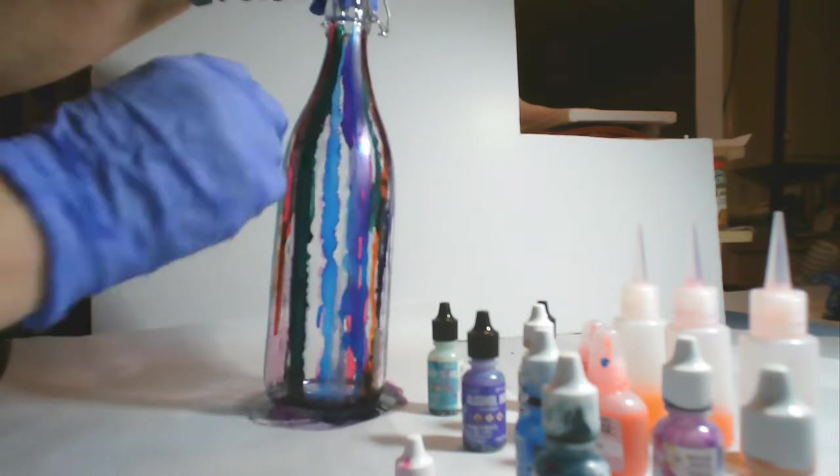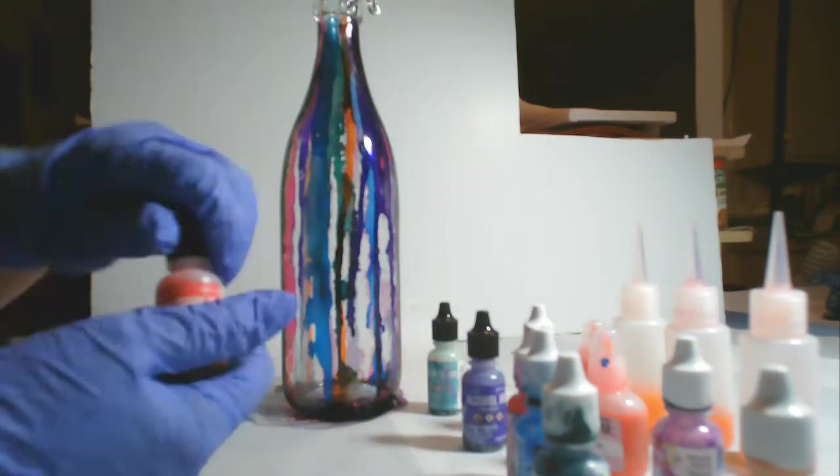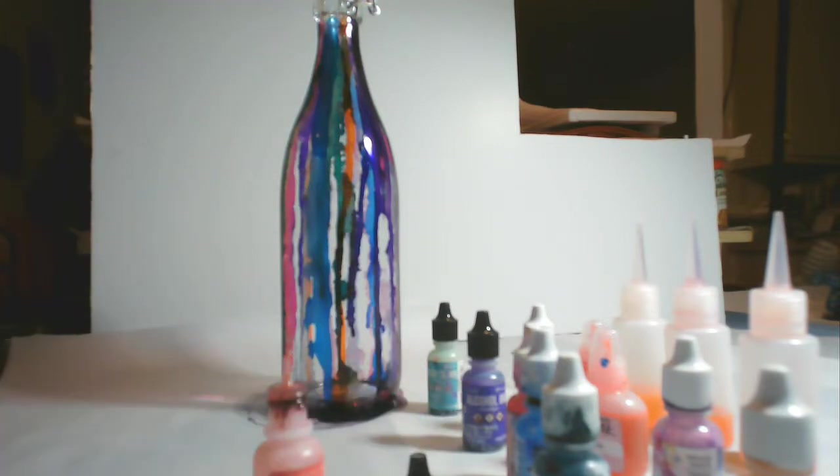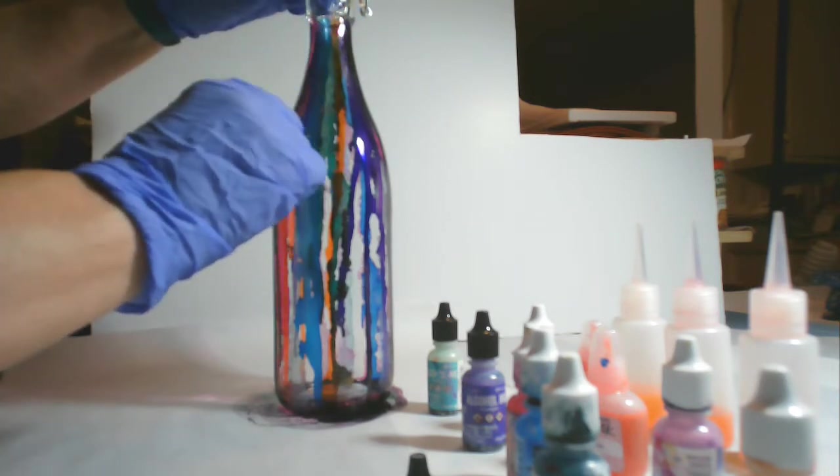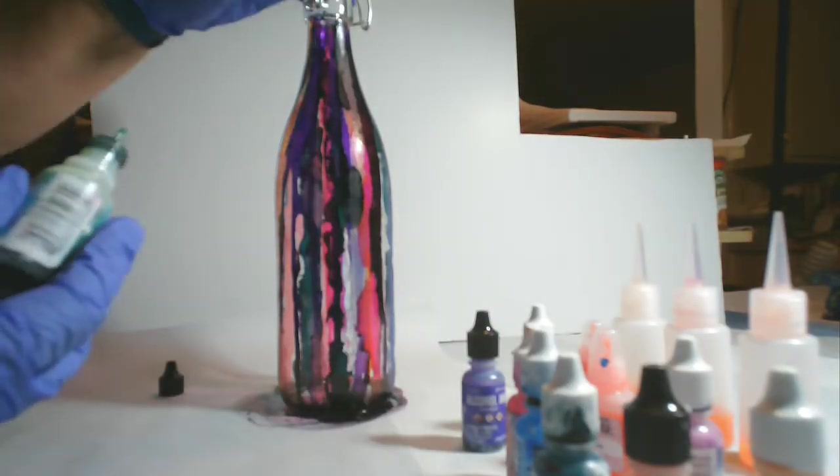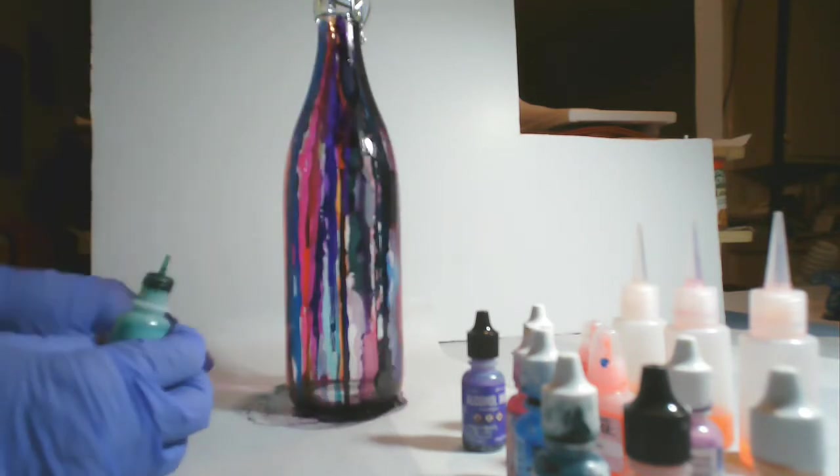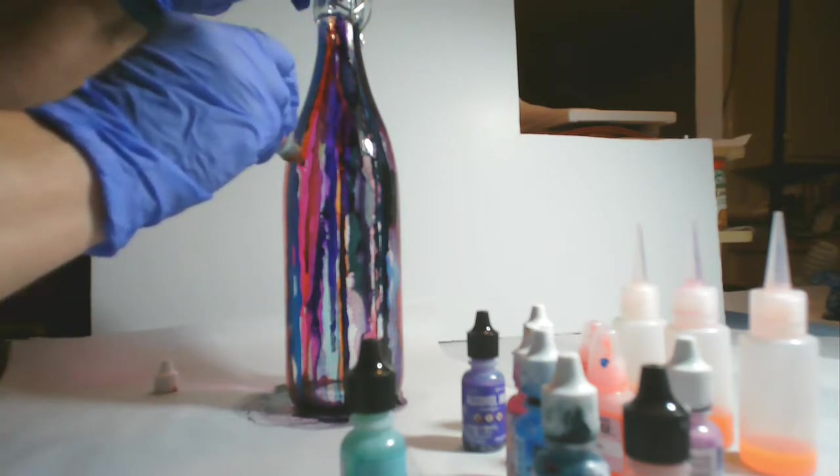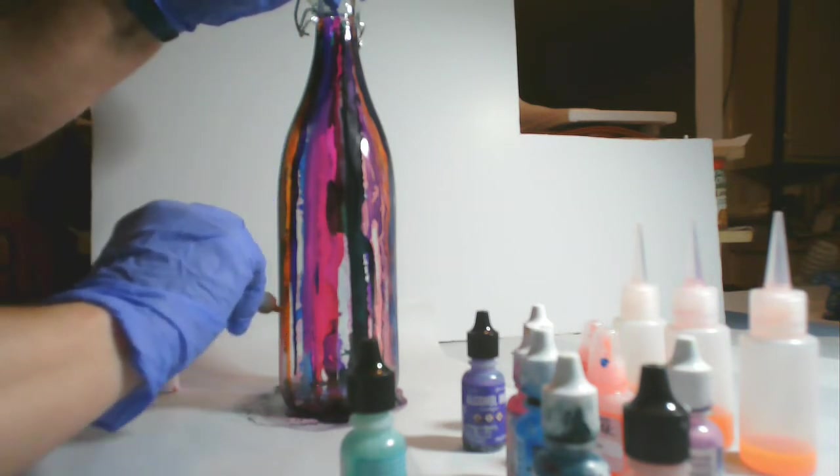But I don't want to use too much. Now we'll do a dab of magenta. And this is the flamingo. It's almost like a watermelon color. I really like that. And this is the patina.